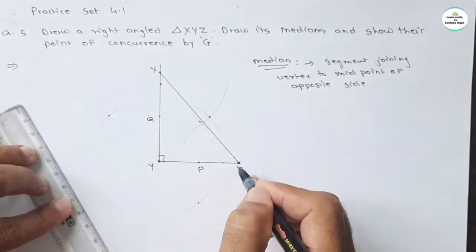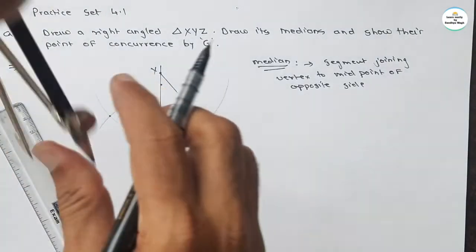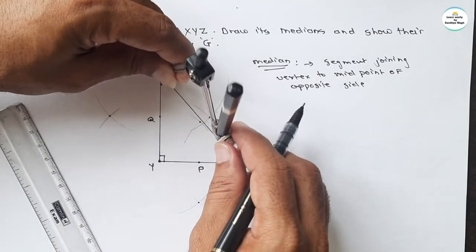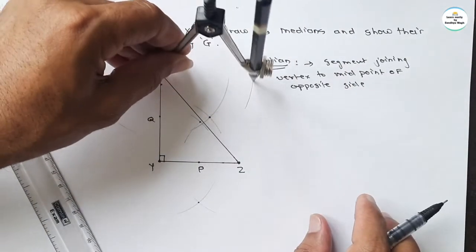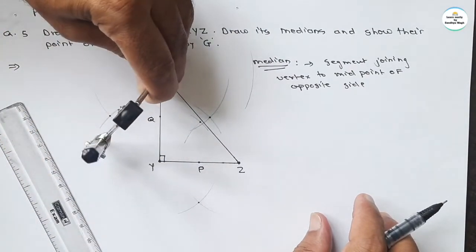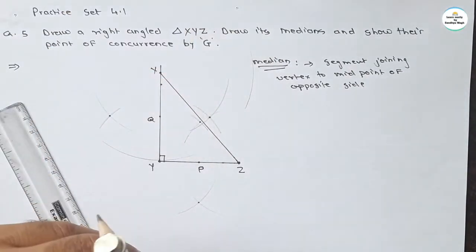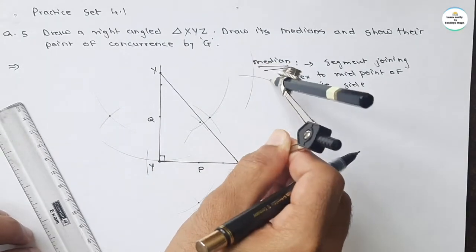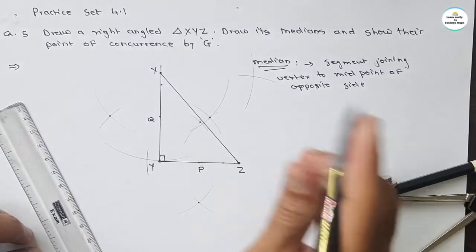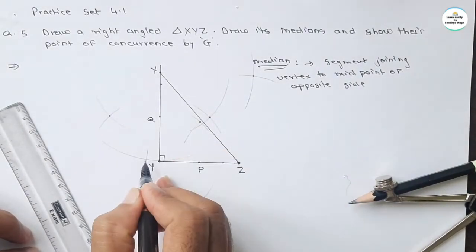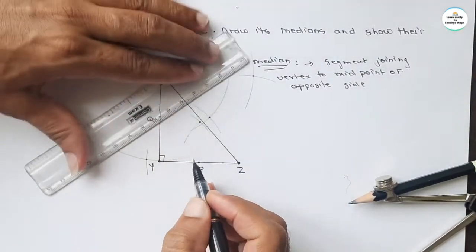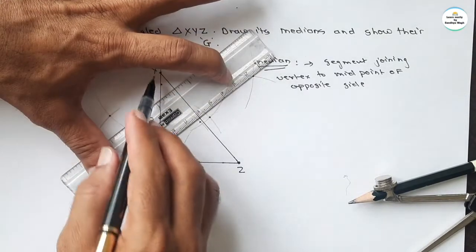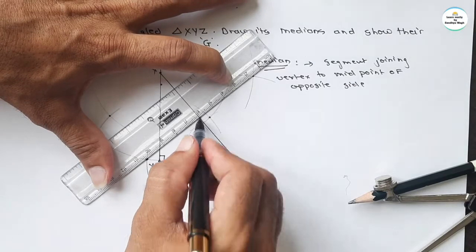Similarly, draw the midpoint of XZ. To draw the midpoint of XZ, take more than half of XZ and mark arcs on both sides by taking centers X and Z. Then again you will get two distinct points of intersections. Join these two points, that segment will intersect XZ at a point, let it be R. So we have drawn midpoints of all three segments.